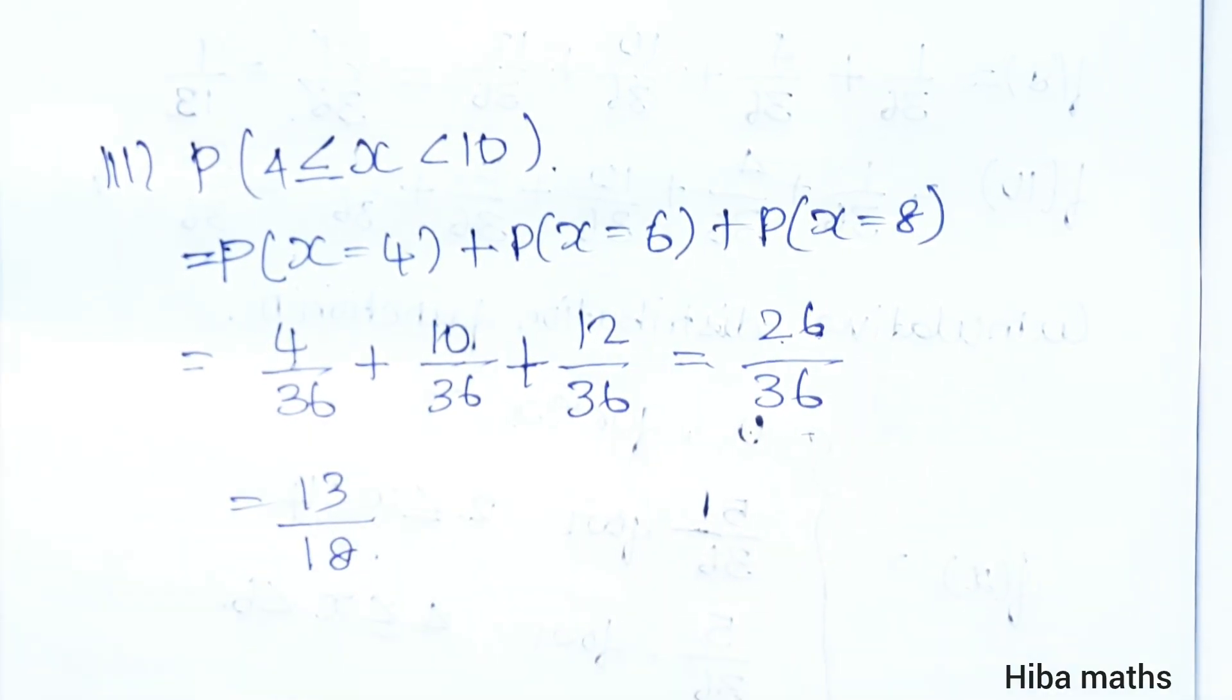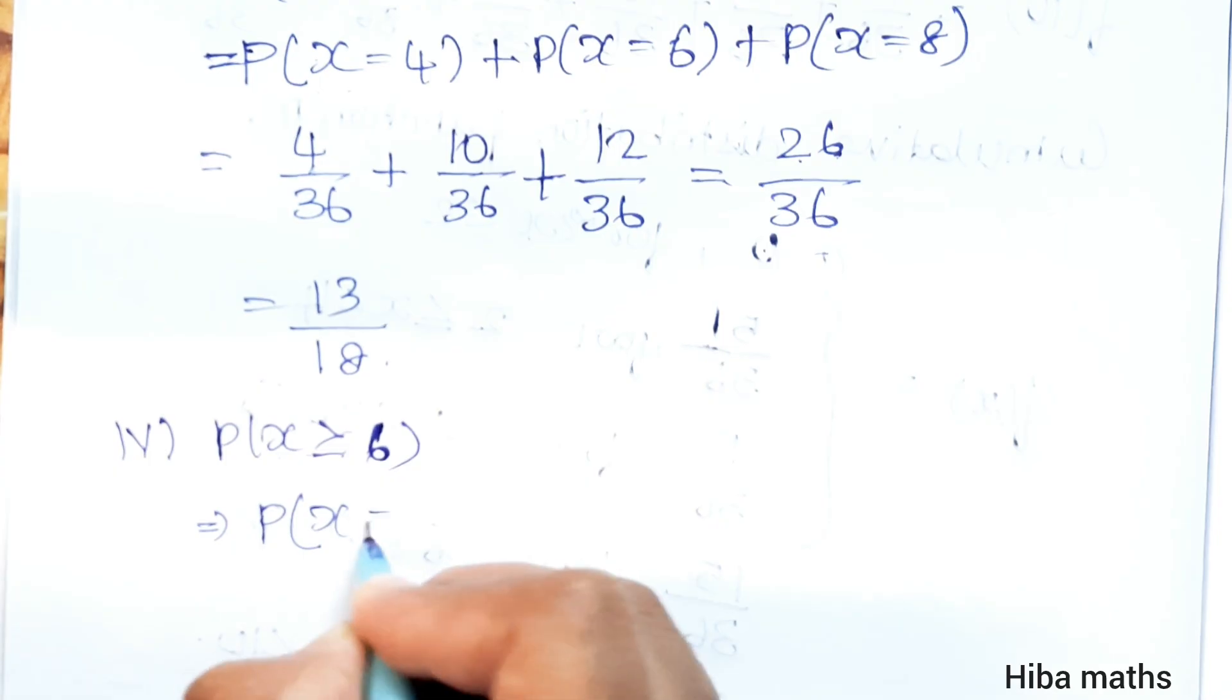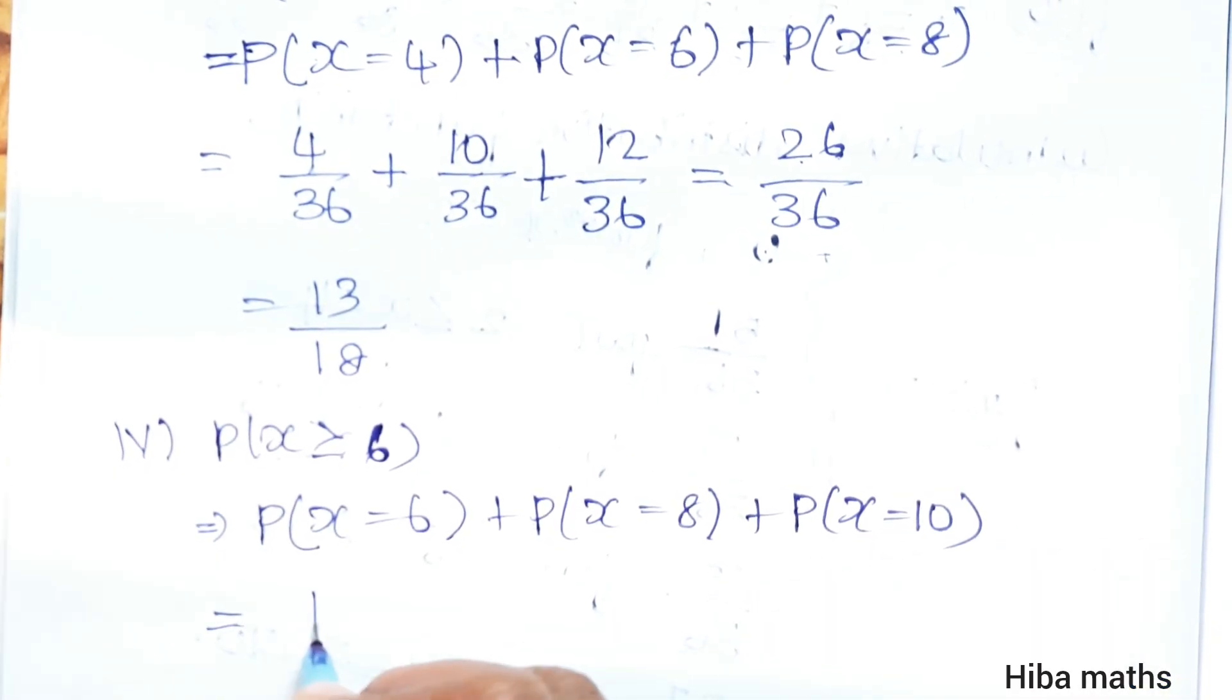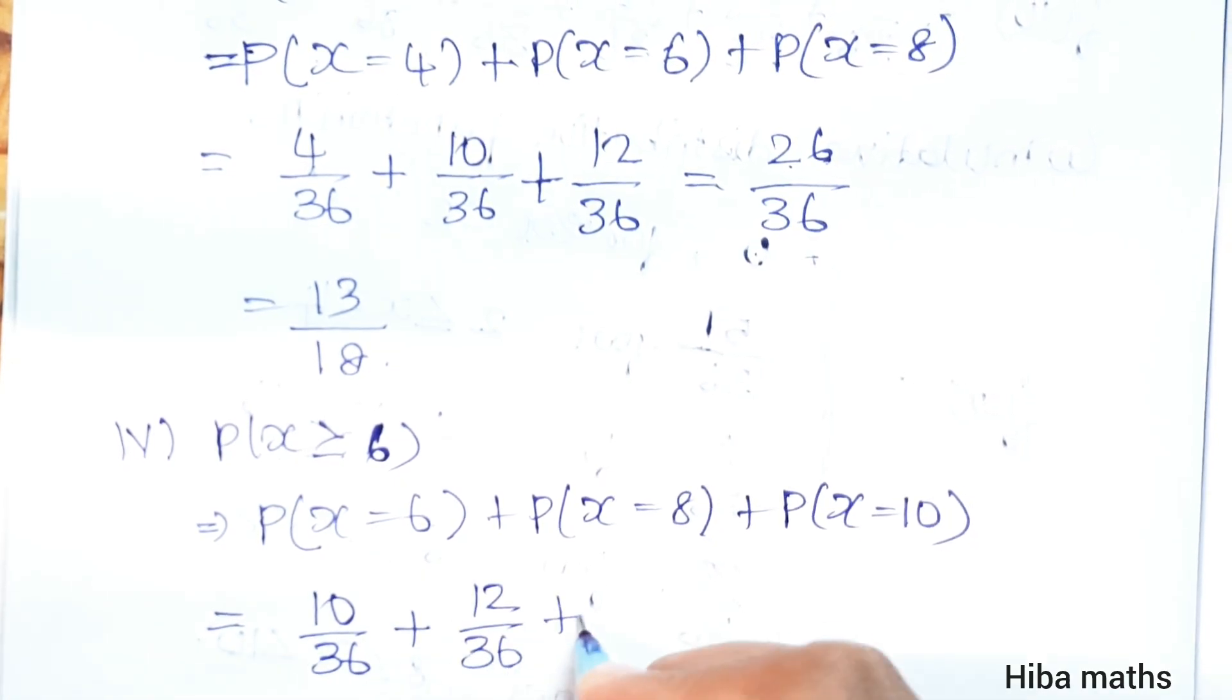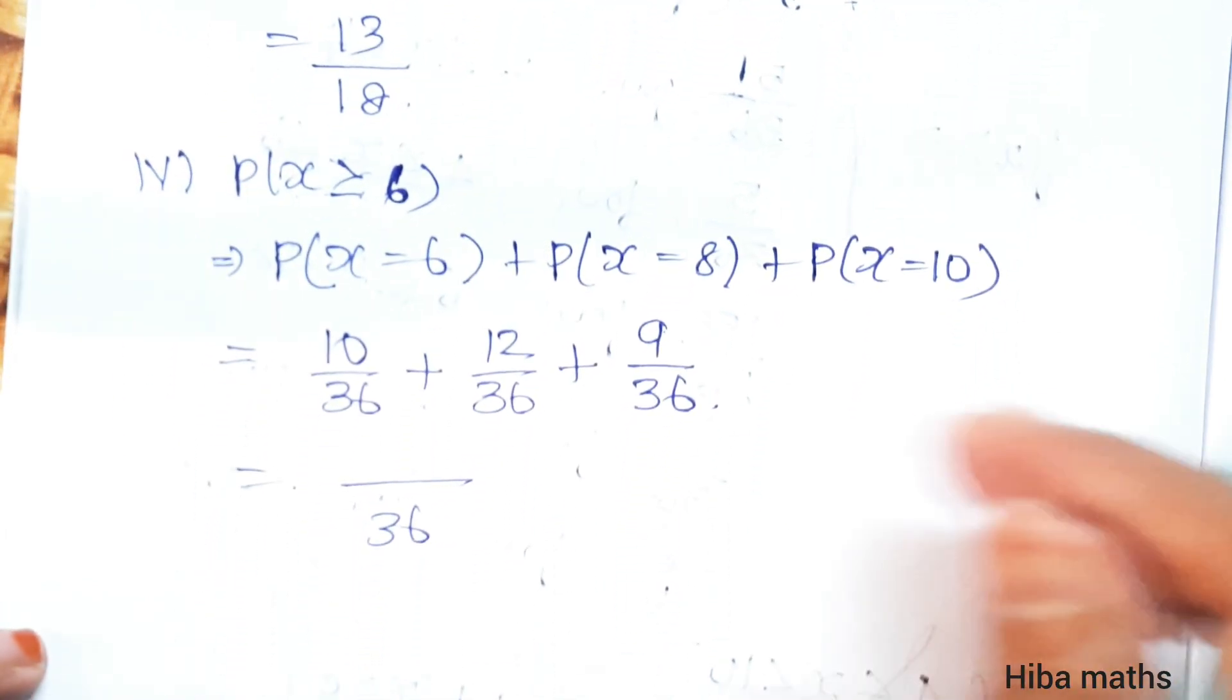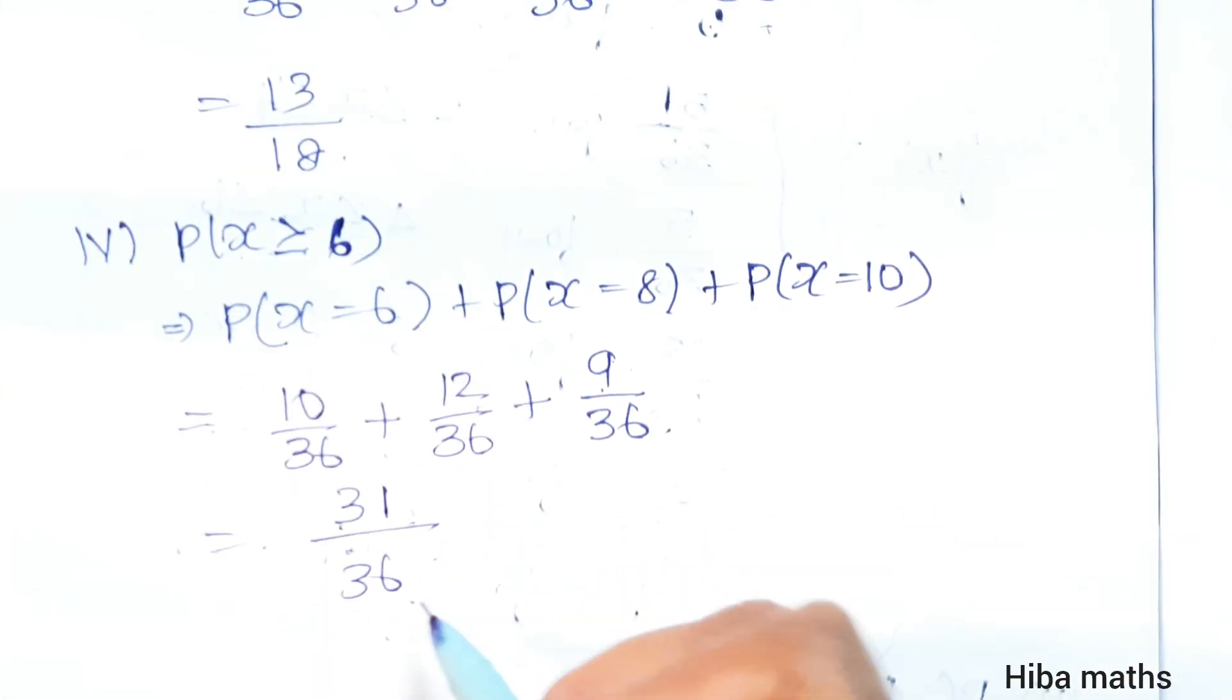Fourth subdivision: P of X is greater than or equal to 6. We add P of X equals 6 plus P of X equals 8 plus P of X equals 10. X equals 6 is 10 by 36, 8 equals 12 by 36, 10 equals 9 by 36. Adding: 10 plus 12 equals 22, plus 9 equals 31. So the final answer is 31 by 36.